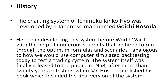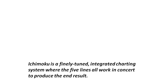Ichimoku history: this is a charting system that was developed before World War II by Goichi Hosada. He back-tested it for quite some time and finally released it 20 years later in 1968. Ichimoku is a very finely tuned integrated charting system where all five lines work in concert to produce the end result.